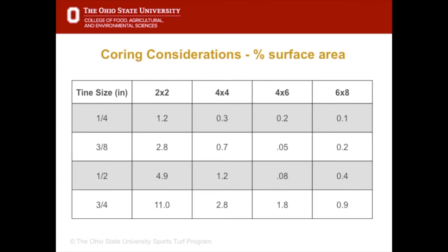For example, with a quarter inch diameter tine spaced two inches apart, just over one percent of the surface is affected. That particular machine would have to run over the same area ten times to make an improvement. By comparison, three quarter inch tines at the same spacing affects 11% of the surface and would only need to be used once.